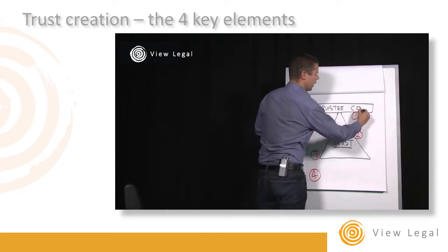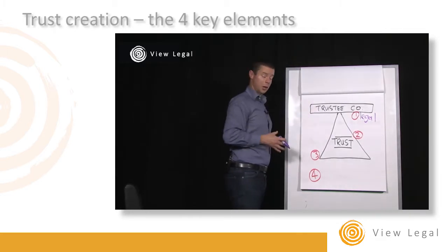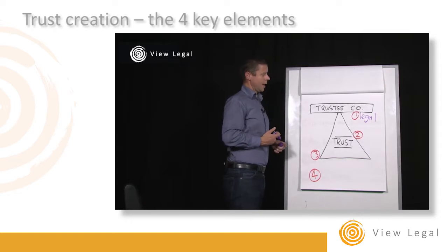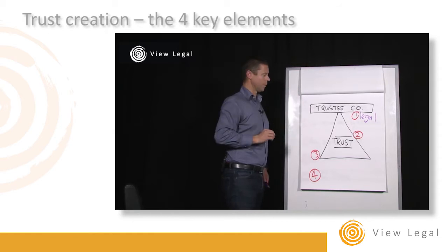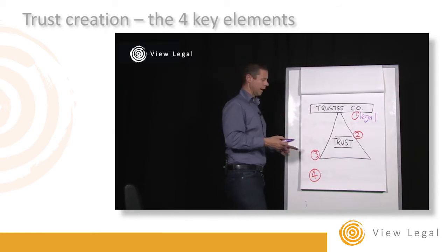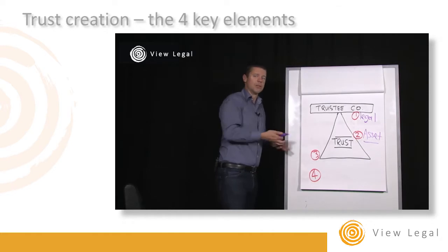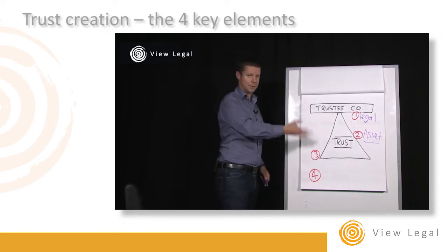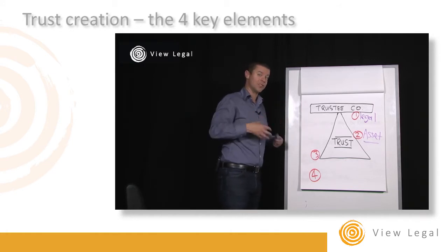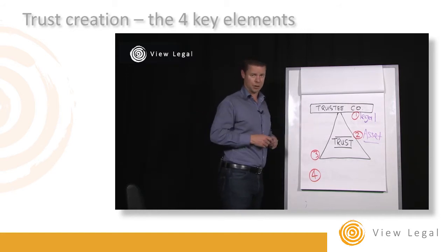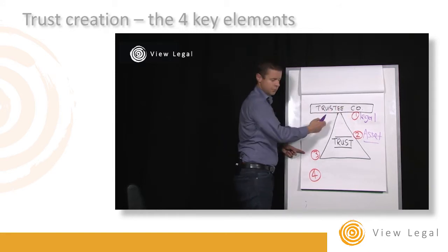The first principle is that you need someone with legal ownership — invariably that's a trustee, and with all discretionary trusts that trustee will be a company. Its sole legal role is having the physical legal ownership of the underlying asset. That asset sits inside the trust, and without an asset there is no trust relationship. It may sound simple, but it's a really key point, especially when we start talking about what happens when a trust actually vests.